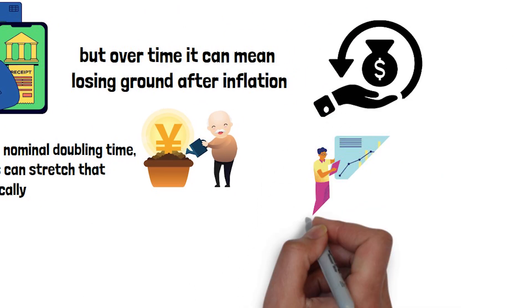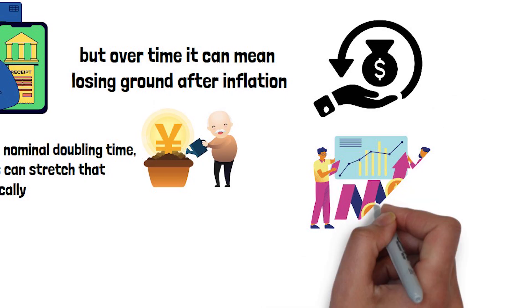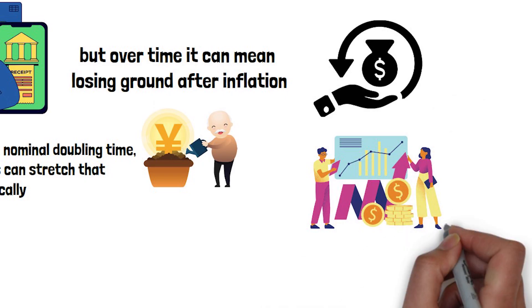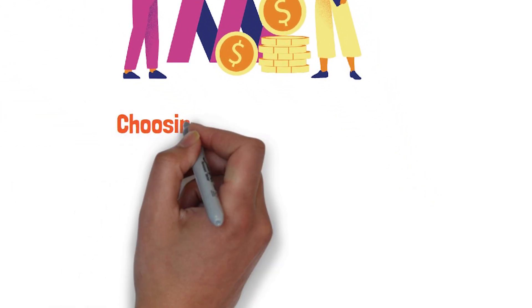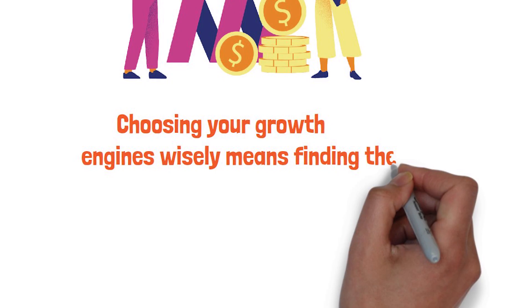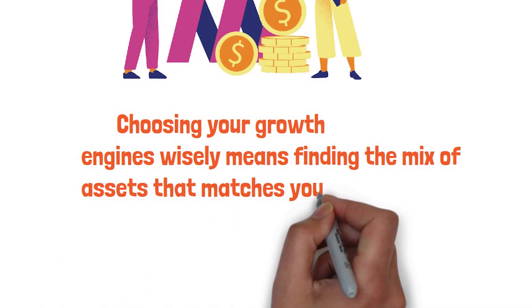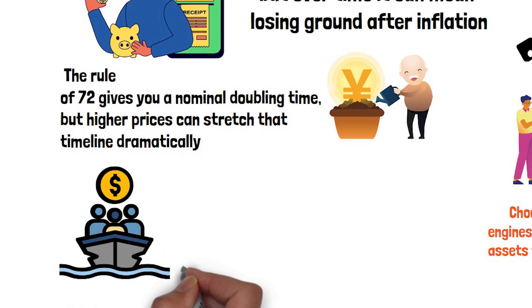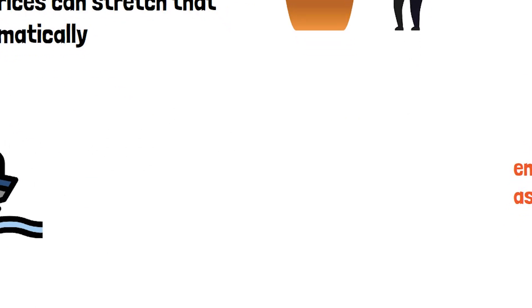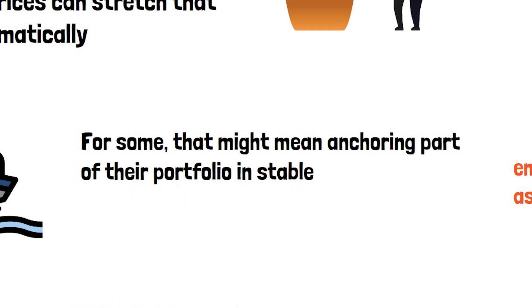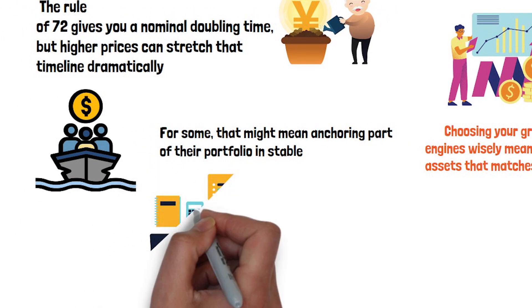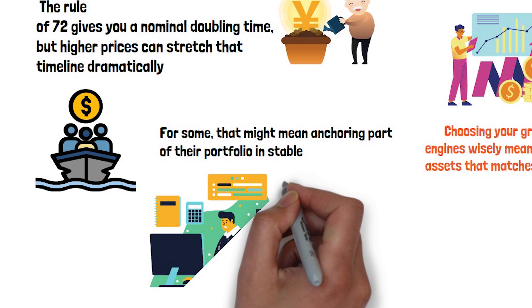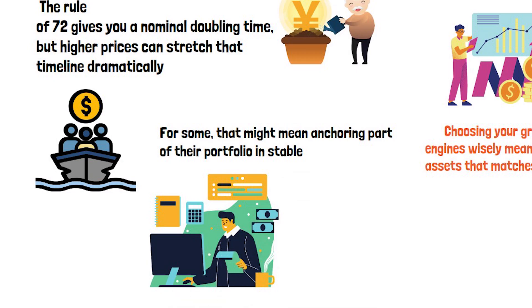Remember, if inflation is 4% and your nominal return is 6%, your real return is about 2%, and the real doubling time is much longer. Choosing your growth engines wisely means finding the mix of assets that matches your goals and your capacity for risk, while still giving you the best chance to outpace inflation. For some, that might mean anchoring part of their portfolio in stable, lower-yield holdings for security, while allocating enough to higher growth options, like stocks or certain real estate investments, to keep the timeline competitive.